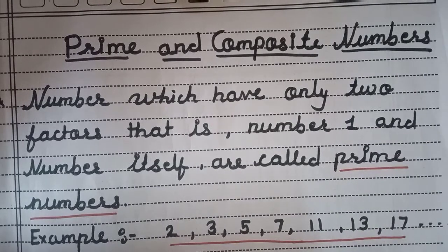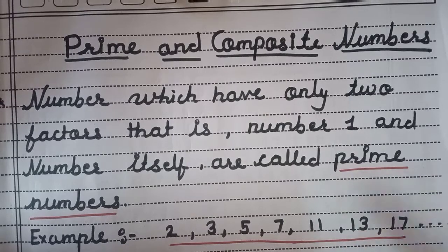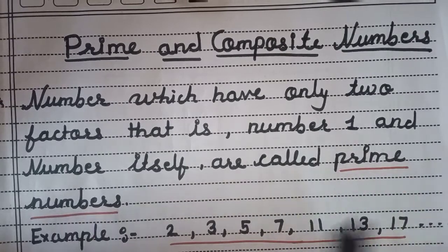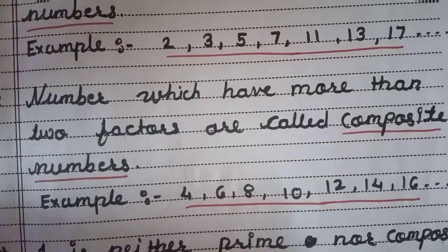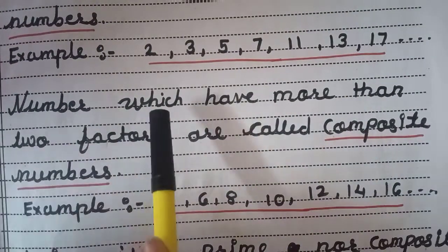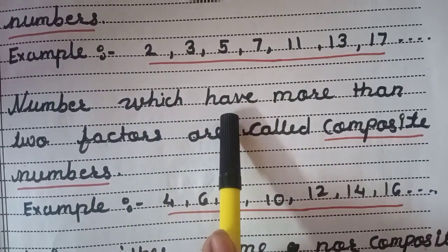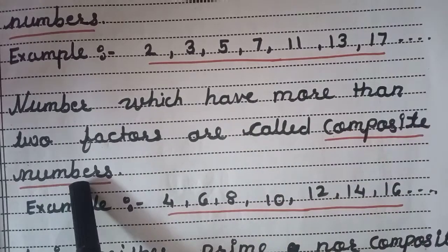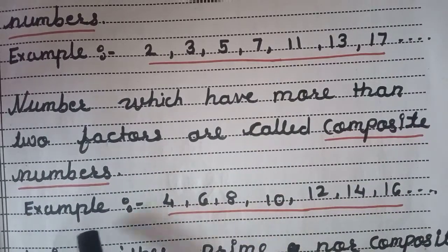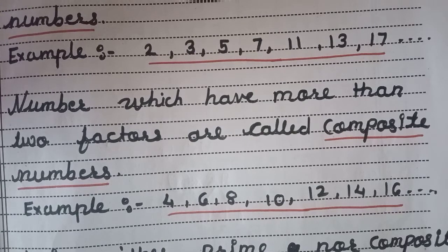So prime number is: जो number खुद के table में आता है और 1 के table में आता है, that number is called a prime number. Then next — what are composite numbers? Numbers which have more than 2 factors are called composite numbers. यानी जिसके 2 से ज्यादा factor हों। 2 factor होते हैं उसको prime number बोलते हैं, और अभी 2 से ज्यादा होंगे उसको composite numbers बोलेंगे।